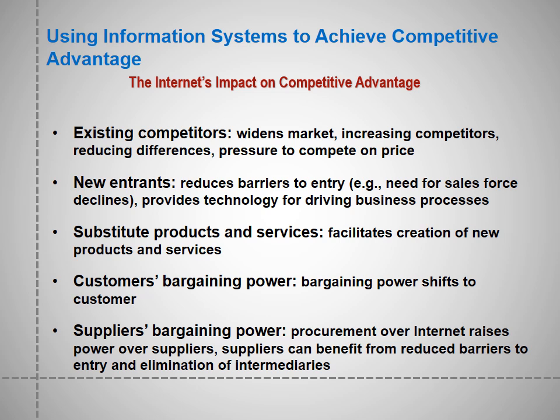For customers' bargaining power, power shifts to the customer — they have a choice, so firms must work on capturing those customers. For suppliers' bargaining power, procurement over the internet raises power over suppliers. Suppliers can benefit from reduced buyer barriers to entry and elimination of intermediaries. As a supplier, you don't need a middleman anymore; distribution can be direct from business to business, saving costs and allowing you to lower prices to be more competitive.